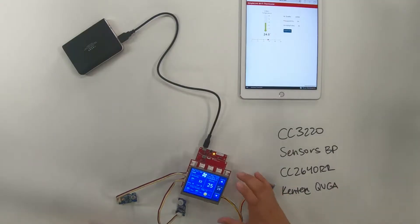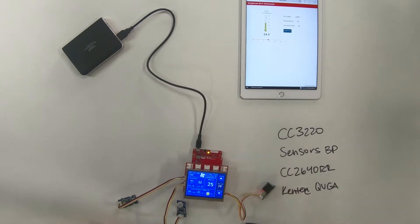So the 3220 handles the Wi-Fi and the main application. The sensors booster pack we're using for temperature, humidity, and pressure. The 2640R2 we're using for BLE provisioning of the access point. And the Kentek QVGA up here is showing the display and the resistive touch.